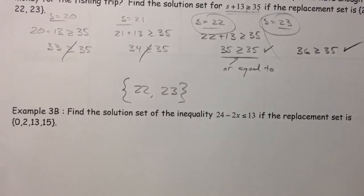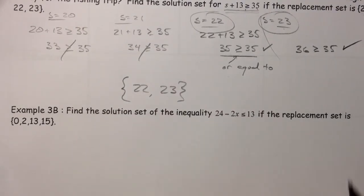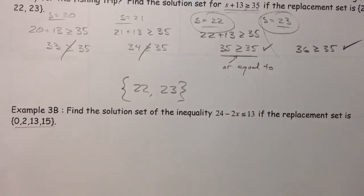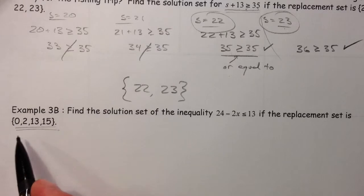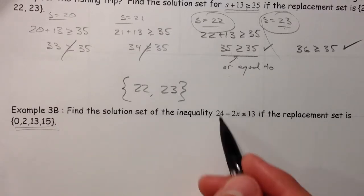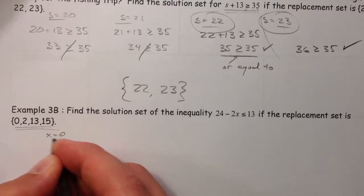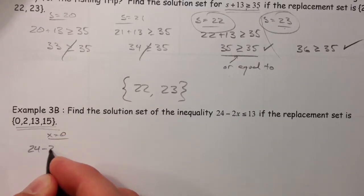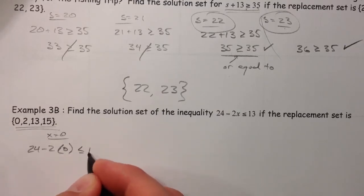Find the solution set of the inequality 24 minus 2x is less than or equal to 13, if these are the numbers we're plugging in. So, which of these are going to be in our solution set? The ones that make this true. And so, we're going to say, x equals 0. 24 minus 2 times 0.